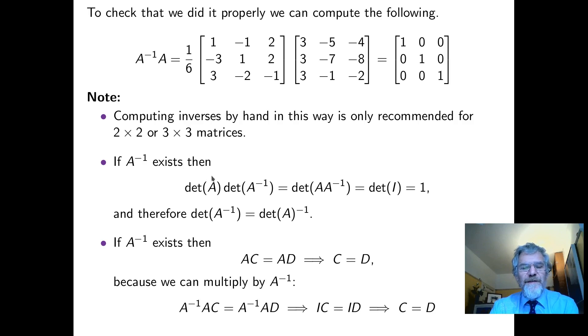If A inverse exists then the det of A times A inverse is the det of the identity which is 1. So that means that the det of the inverse of the matrix must be 1 over determinant, the reciprocal of determinant.